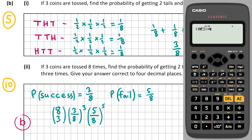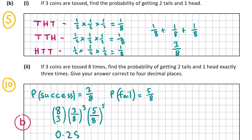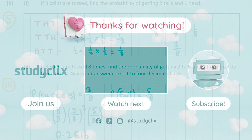For the Bernoulli trial with 8 tosses and exactly 3 successes, the formula is: 8 choose 3 × (3/8)³ × (5/8)⁵. Working that out: 8 choose 3 × (3/8)³ × (5/8)⁵ = 0.2816319466, which correct to four decimal places is 0.2816. That's the probability of getting two tails and one head exactly three times when tossing three coins eight times. Thank you very much for watching and I hope this helped.